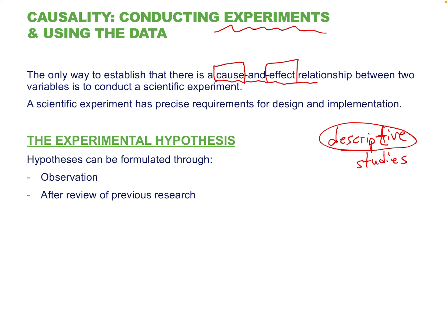Now we're going to talk about experiments. With the experimental method, a scientist can demonstrate that something can directly cause a change in something else — especially if you're studying medicine. Did this treatment directly cause someone to feel better or remove their disease? It could be a teaching method: did adding long-winded PowerPoint narration videos improve student grades? That could be an experiment.